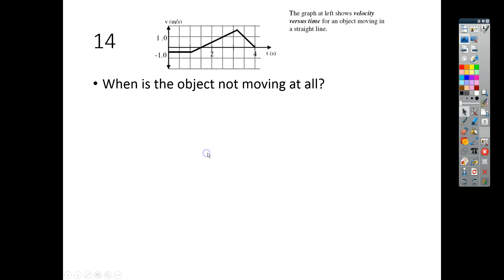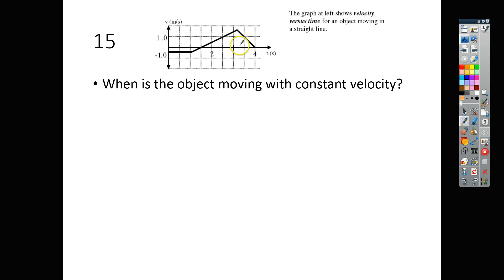For number 15, when is the object moving with a constant velocity? Because we're dealing with a velocity versus time graph, this portion right here is not constant. It goes from negative 1 all the way up to about 1½ meters per second. So this can't be right. This one is not moving with a constant velocity either. It is decelerating. So the only part would be right here.